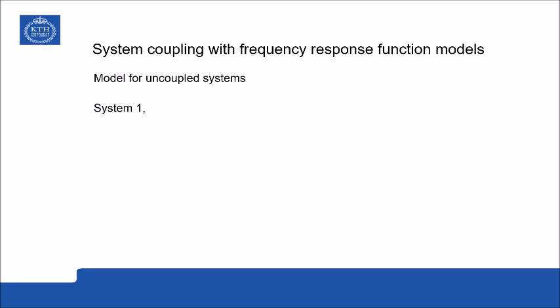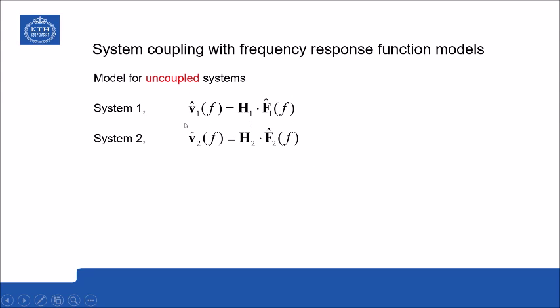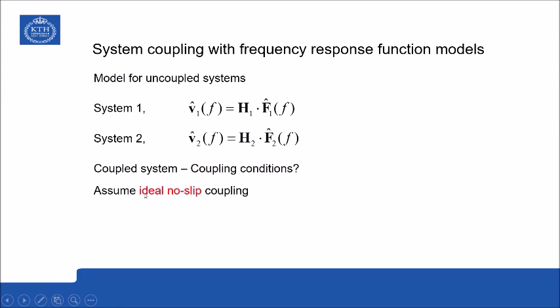To start, we use the passive models for the uncoupled systems: system one has its passive model, and system two has the analogous model. To couple the systems, we introduce coupling conditions. To simplify the methodology, we assume ideal non-slip coupling — meaning the systems are firmly coupled at the coupling points without any friction or slip.